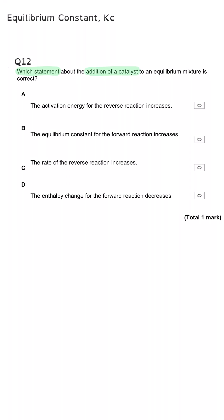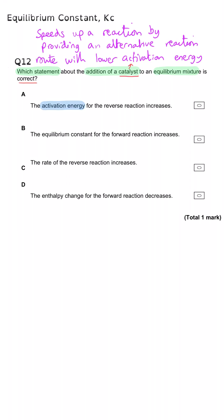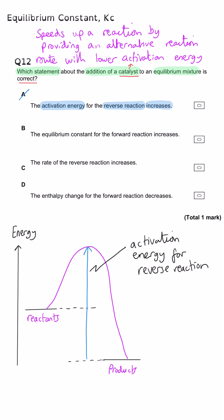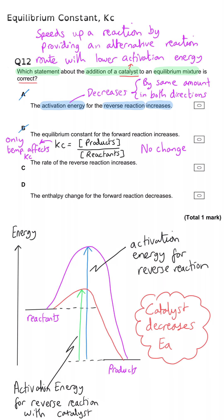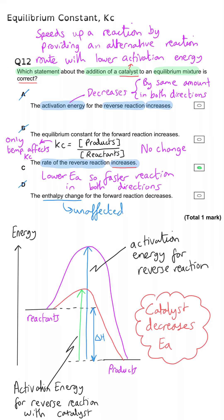Which statement about the addition of a catalyst to an equilibrium mixture is correct? A: the activation energy for the reverse reaction increases — not true, the activation energy decreases in both directions by the same amount, as seen from the reaction profile where the hill gets shallower. B: the equilibrium constant for the forward reaction increases — no, it does not change at all; only temperature affects the equilibrium constant. C: the rate of the reverse reaction increases — this is correct. The rate of both directions increases by the same amount, so the position of equilibrium stays the same. So C is correct.